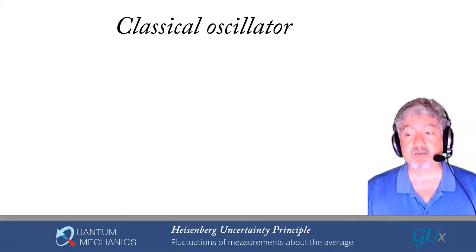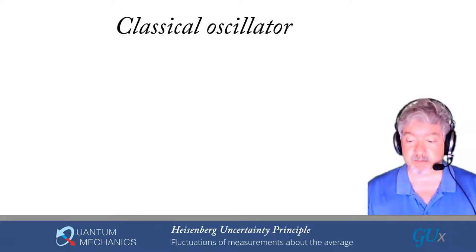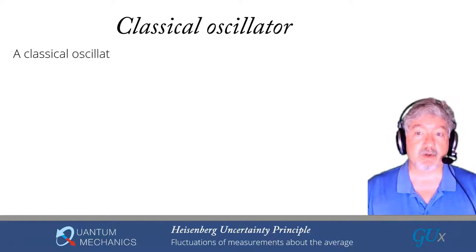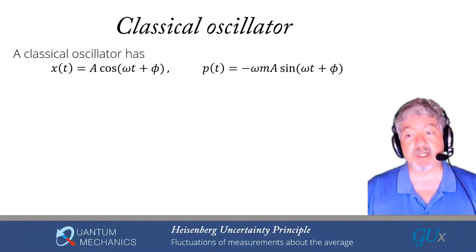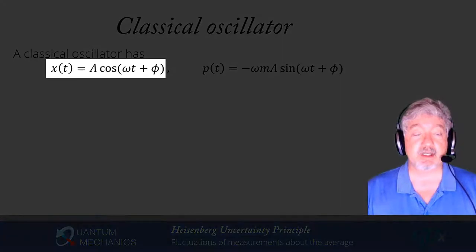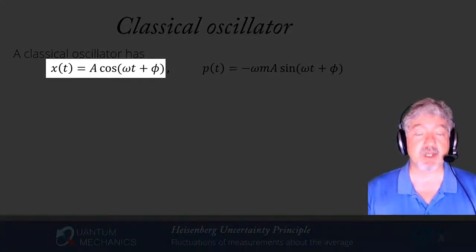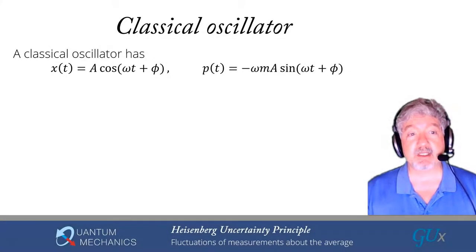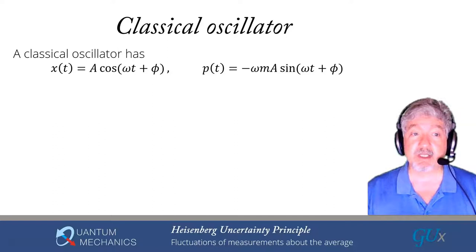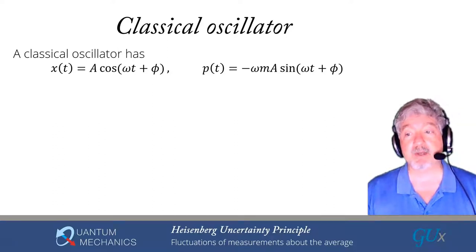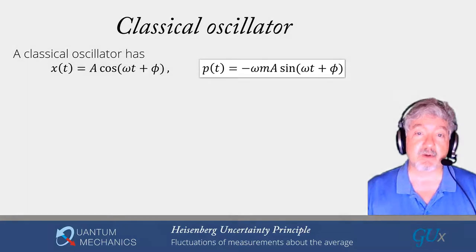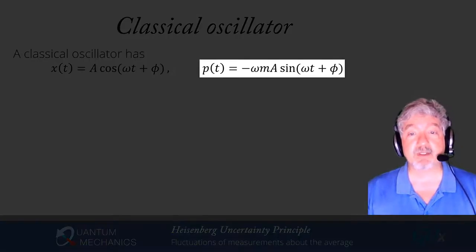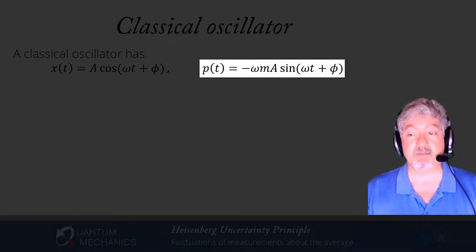Let's take a look at an example from a classical oscillator. Remember your equation of motion for a classical oscillator — we just get simple harmonic motion. The position as a function of time is just some amplitude a times the cosine of omega t plus some phase shift phi. The momentum as a function of time is just minus omega m a sine of omega t plus phi.